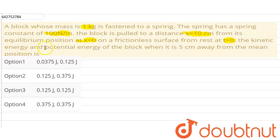The kinetic energy and potential energy of the block when it is 5 centimeter away from the mean position is what we need to find. So in the given question, we have been given that a block of mass m equals 1 kg is fastened to a spring whose spring constant is 100 Newton per meter. Now it is pulled to a distance of 10 centimeter from its equilibrium position.